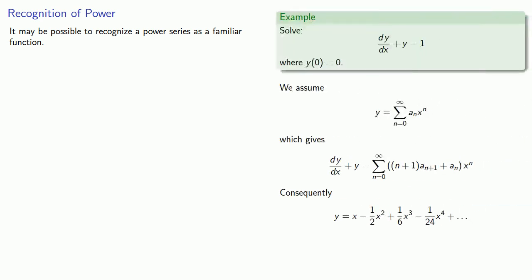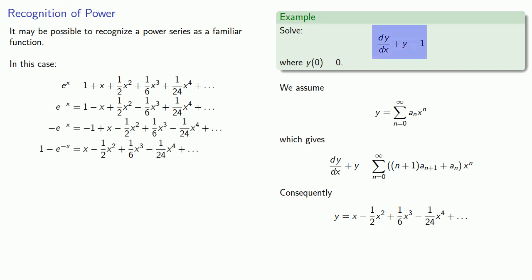In some cases, it may be possible to recognize a power series as a familiar function. In this case, note that e to power x has power series, which means that e to power minus x will have the power series. And with a little bit of algebra, we see that this differential equation, which has this solution as a power series, has the same power series as 1 minus e to power minus x. And so our solution is y equals 1 minus e to minus x.